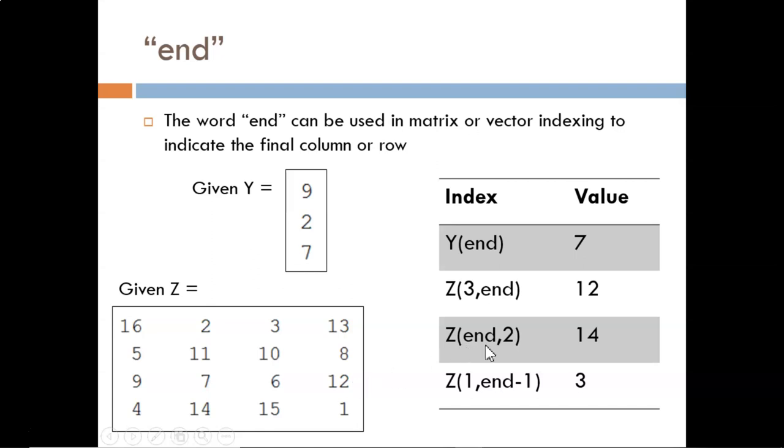Z(end,2) says to look in the last row and second column, which here is a 14. We can also choose an index that is relative to the last row or column, as in this final example.